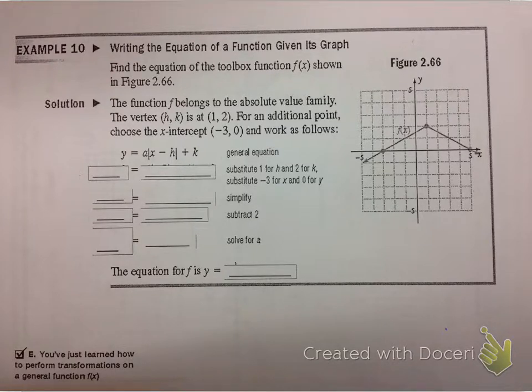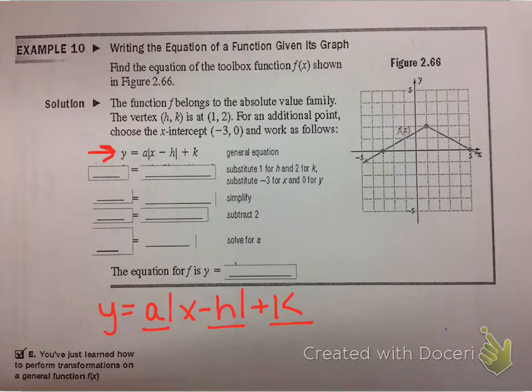So what the steps here are telling you to do is they're telling you that obviously this is an absolute value, so you notice right here they've got what we would call kind of an empty absolute value function. There's no numbers filled in yet for H, for K, and for A. And remember, H and K are the two numbers that are going to move your graph left and right and up and down.